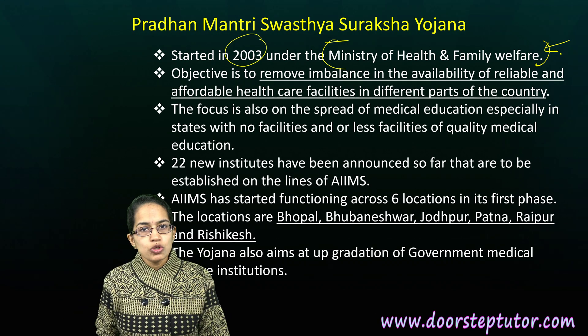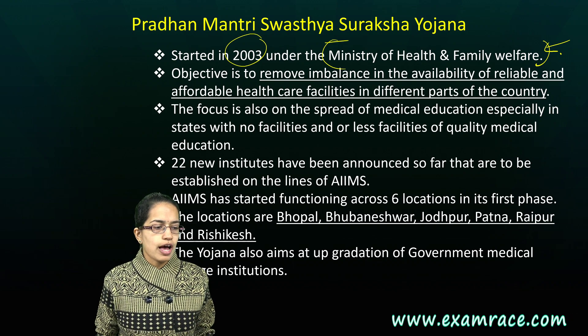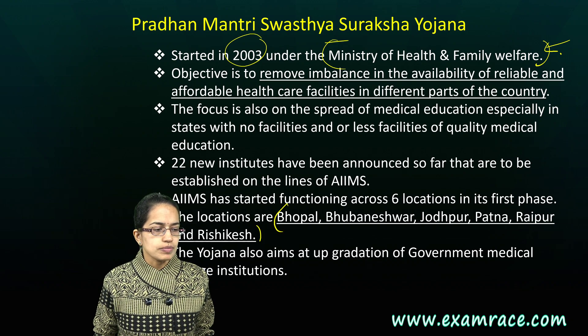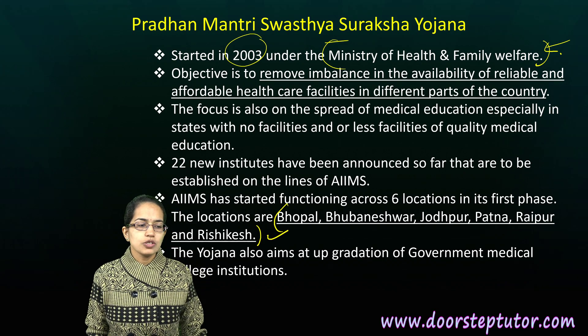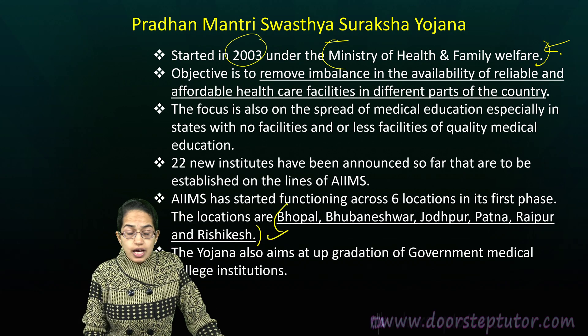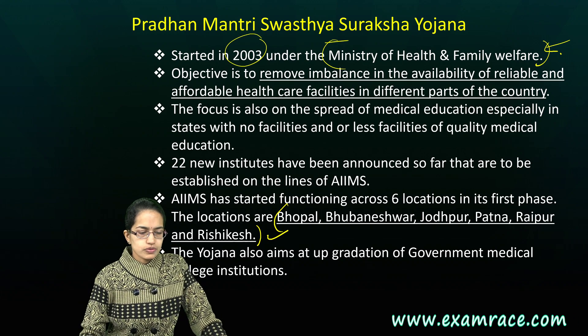The scheme aims to open new regional AIIMS centers — 6 new AIIMS centers are in approval. The new locations are important and could be part of a direct question.